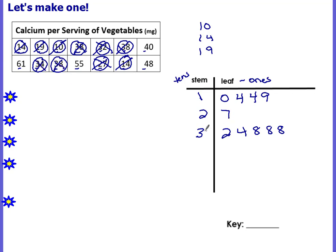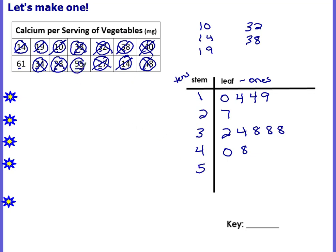To read them, you put the stem in front of each leaf. So the three in front of the leaf of a two becomes thirty-two, and a three in front of the leaf of eight becomes thirty-eight. Our next stem is going to be a four, and there is a forty and a forty-eight. Put your leaves in order from least to greatest: we would have a zero and an eight. Then we have only one fifty, which is fifty-five, so the leaf is a five. And then we have the sixty-one.